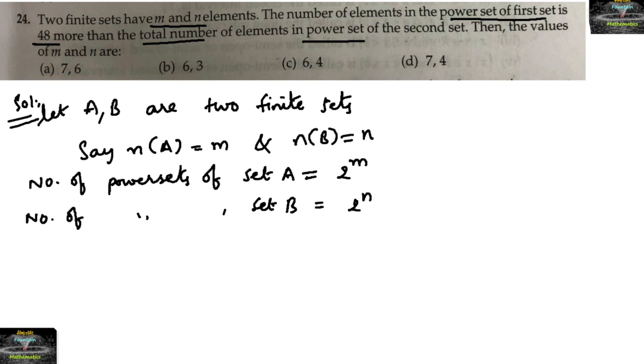What is the condition given? The number of elements in the power set of the first set, 2^m, is 48 more than the total number of elements in the power set of the second set. This can be written as 2^m = 2^n + 48, or 2^m - 2^n = 48.